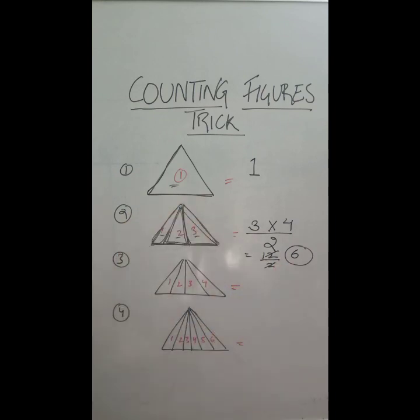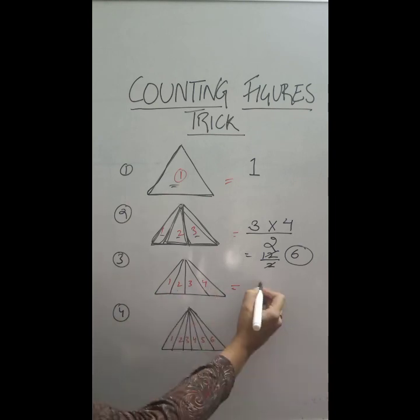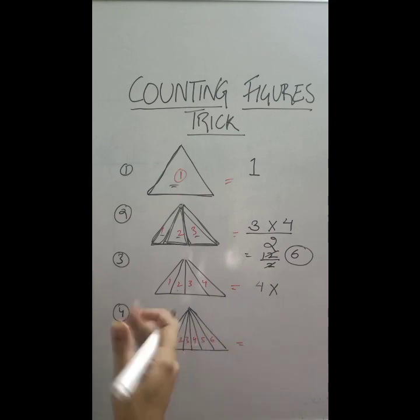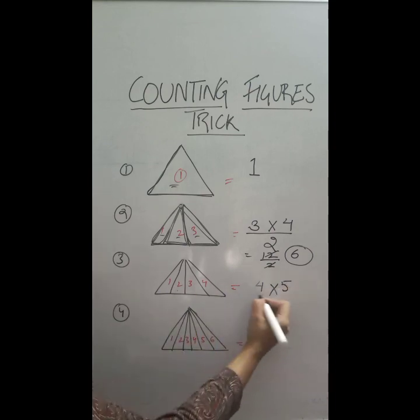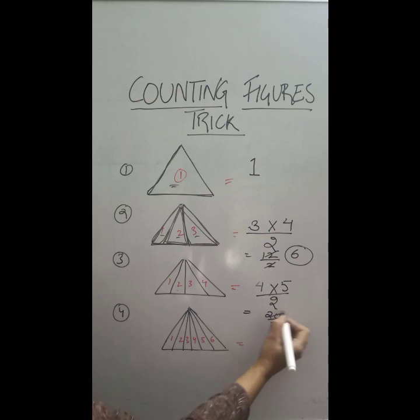Now when I come to this triangle, again I write 1, 2, 3, and 4. Now the highest digit here is 4, which is one digit higher than 4, it's 5, by 2. So 5 into 4 is 20 by 2 is 10, so you can simply put 10 as the maximum number of triangles in this image.